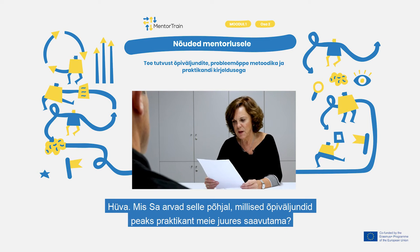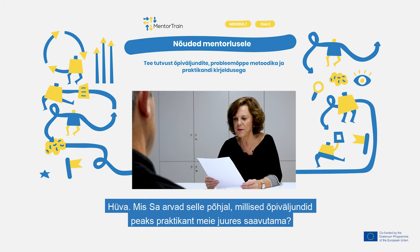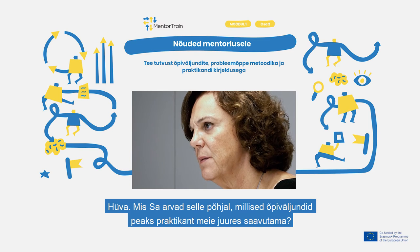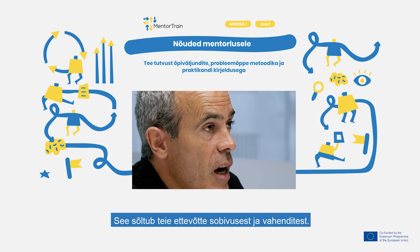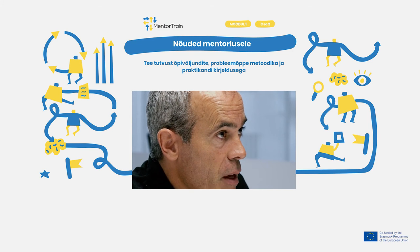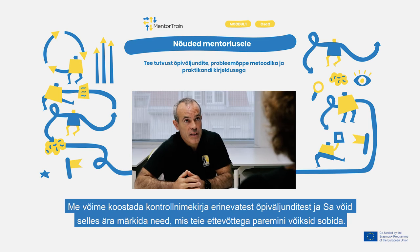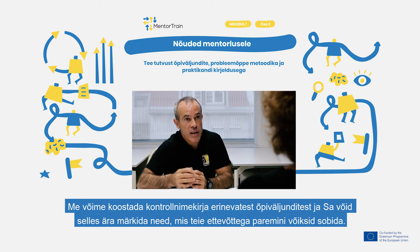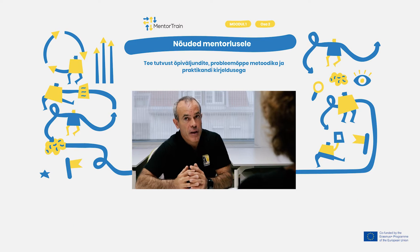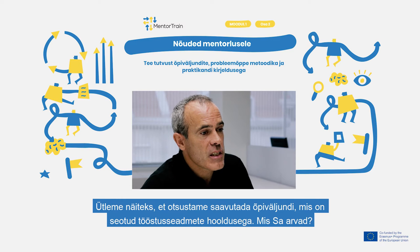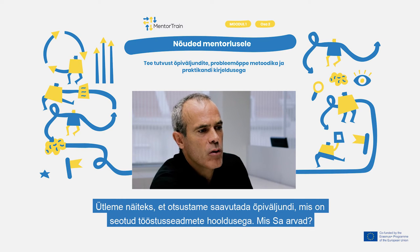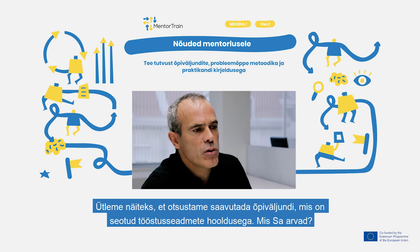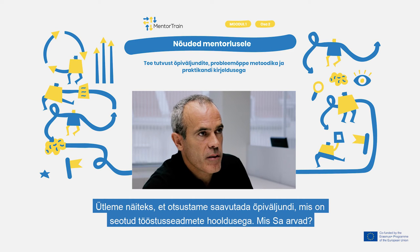According to that, which learning outcomes do you think the apprentice should develop with us? It depends on the suitability and resources of your company. We can write a checklist with the different learning outcomes and you can tick the ones you think fit better in your company. Let's say, for example, that we decide to develop this learning outcome related to industrial maintenance. What do you think?